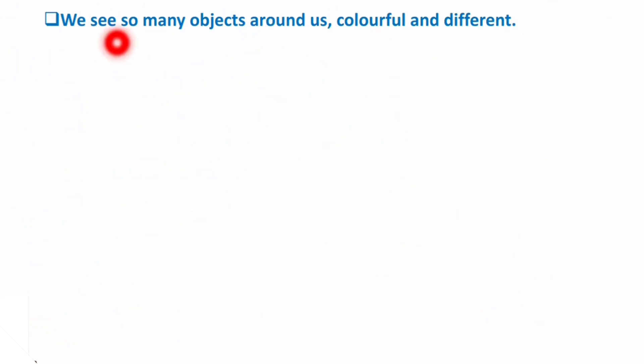We see so many objects around us, colorful and different. If you look around yourself, you may find a variety of objects. They are colorful. Some of them are beautiful, some of them are different in color. We see a lot of things around us, right? But how can we see them?